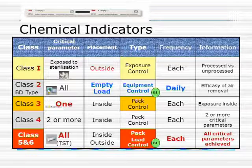Class 1 just indicates that the pack has gone into the sterilizer and come out. Class 2 relates to vacuum. Classes 3 and 4 check any two parameters. The difference between Class 5 and Class 6 is that Class 5 changes gradually, so you cannot tell clearly if sterilization occurred. Class 6 changes abruptly — the yellow becomes blue sharply — so once it changes, you are sure the autoclave cycle is complete.